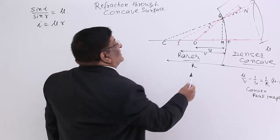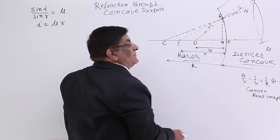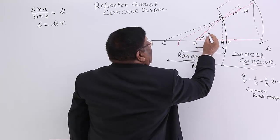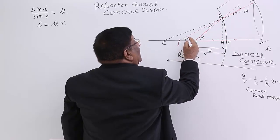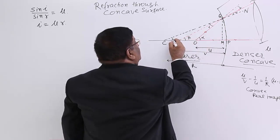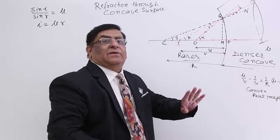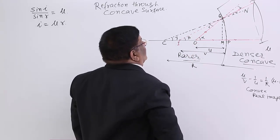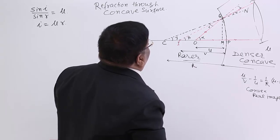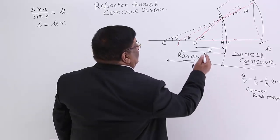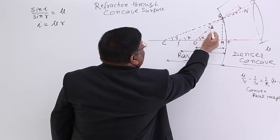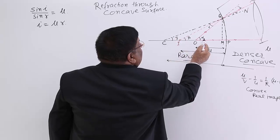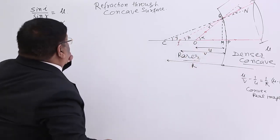We use the same angle notation: alpha is the angle made by the object ray, beta is the angle made by the refracted ray, and gamma is the angle made with the radius of curvature. For I, in triangle Q-C-O: alpha equals gamma plus I, therefore I equals alpha minus gamma.